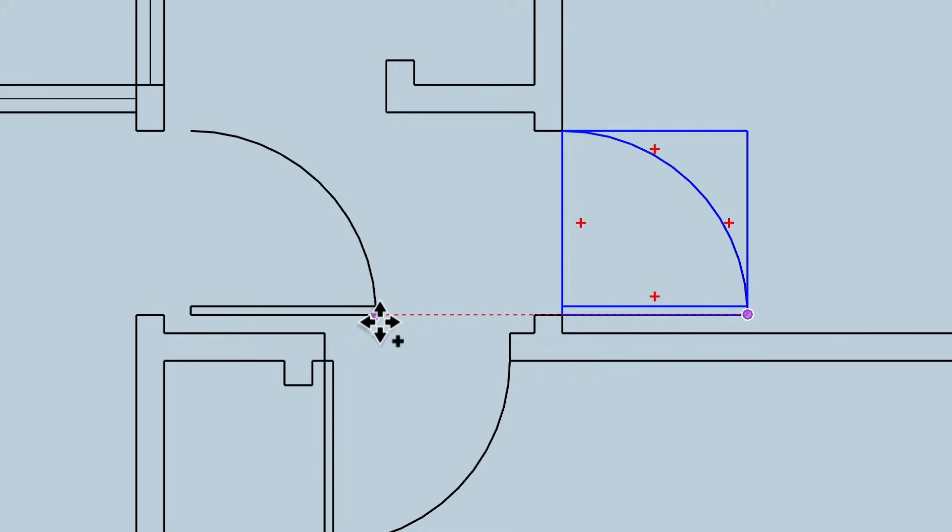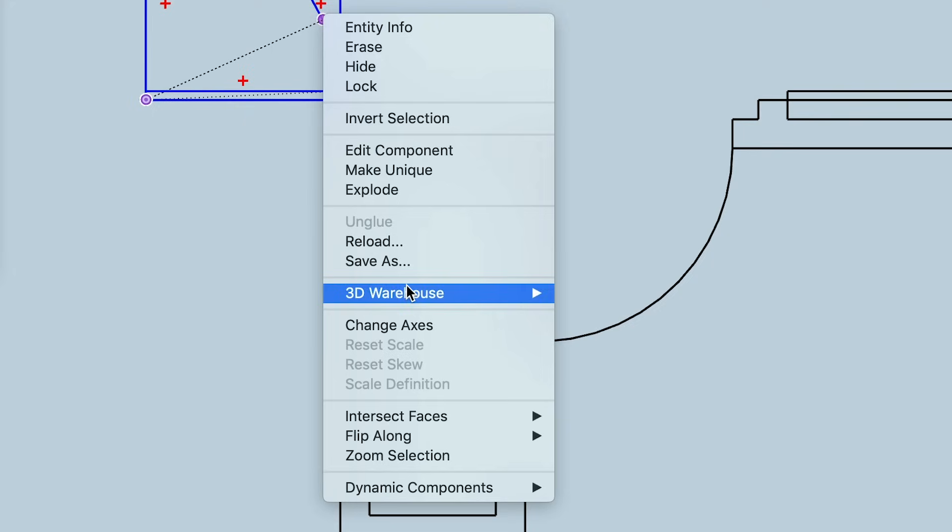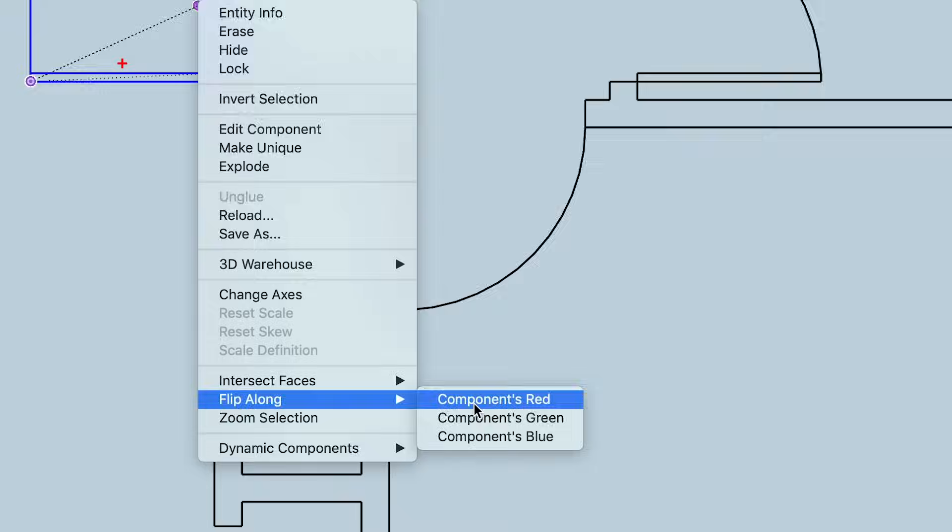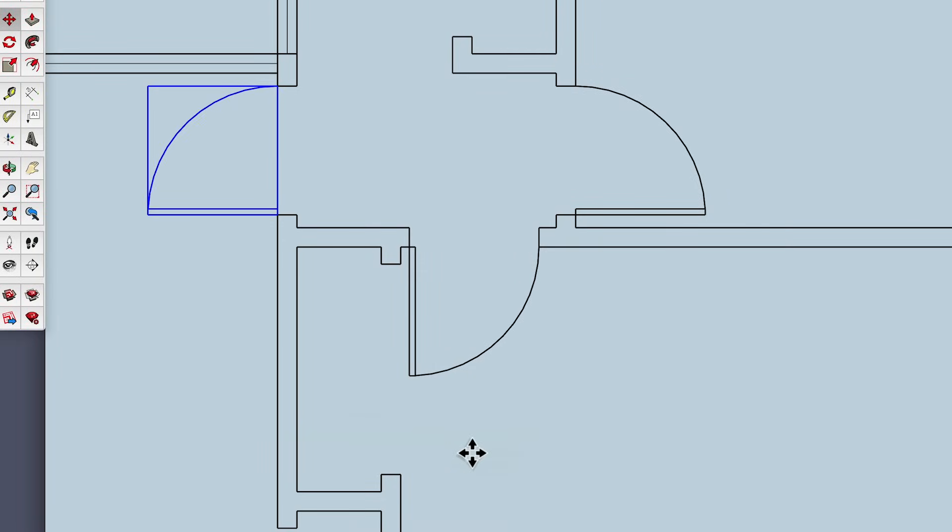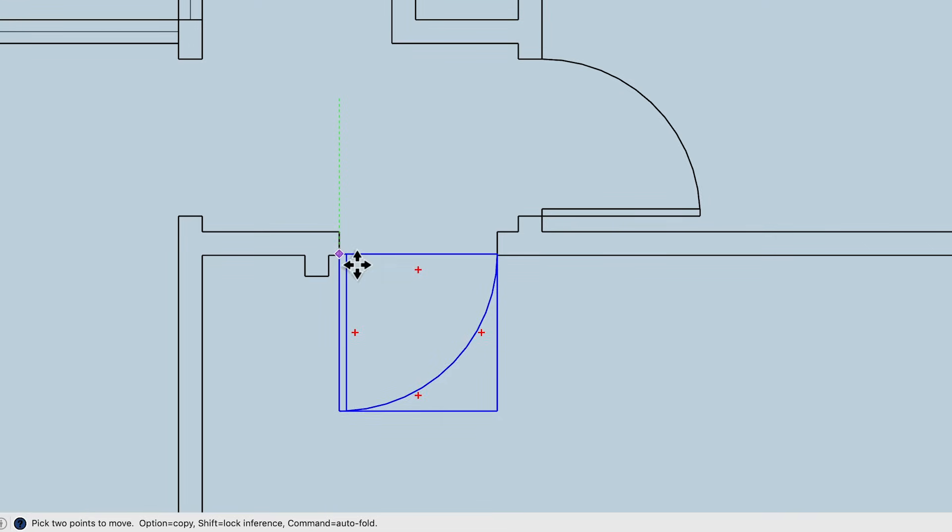Other times, the door will need to be mirrored or flipped. To do that, right click on the component and choose Flip Along. And then you'll either need to flip along the component's green axis or the component's red axis, depending on the orientation of the component. If you're not sure which to choose, just try one. If the result isn't right, you can undo back and try the other option. Now once you have the door oriented and flipped in the proper direction, you'll need to move it into place. With the move tool, click on the corner of your door component and then move your cursor onto the corresponding corner of the door opening in the plan. And click to finish the move. And when you come to a door that has a different width, it's probably fastest to just draw a new one.